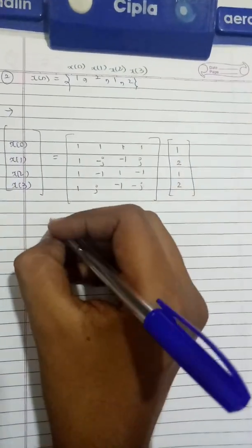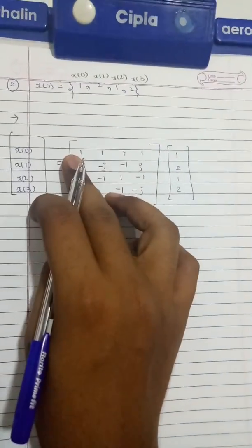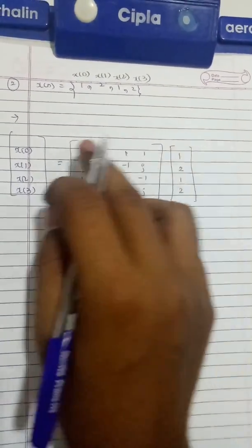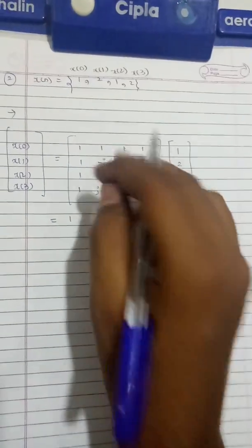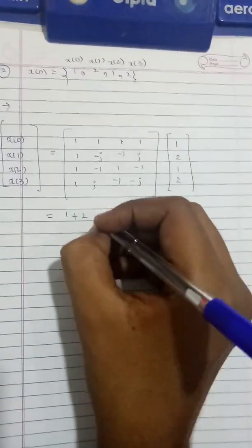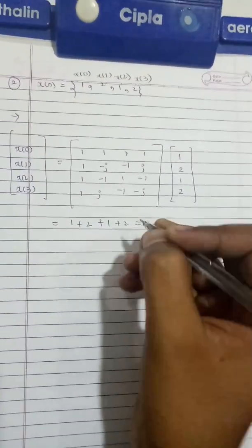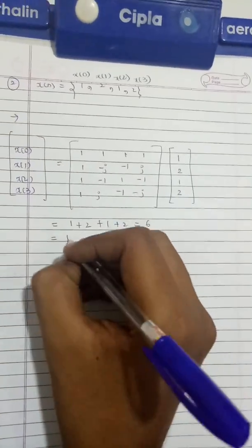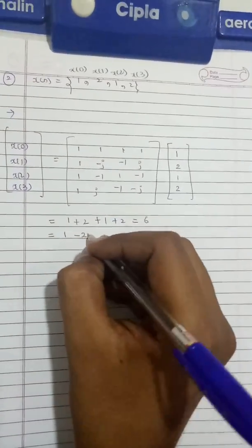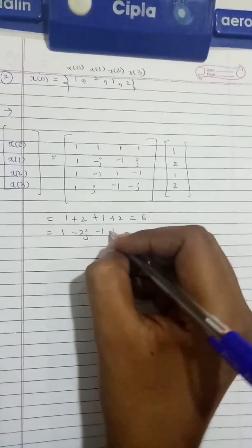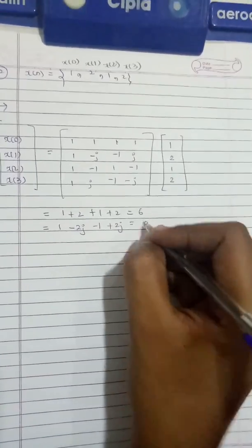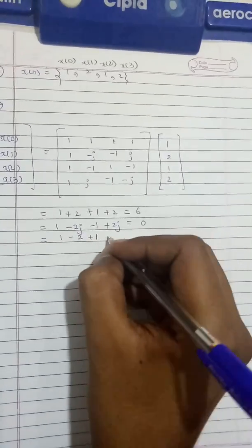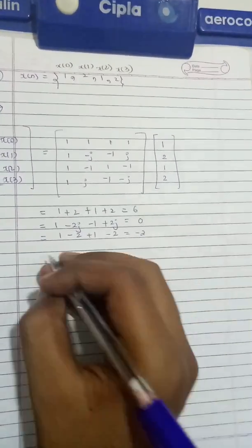Multiplying the matrices: first element is 1+2+1+2 = 6. Second element is 1 - 2j - 1 + 2j = 0. Third element is 1 - 2 + 1 - 2 = -2.